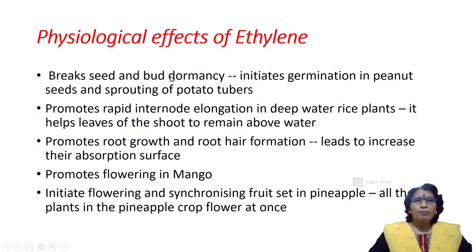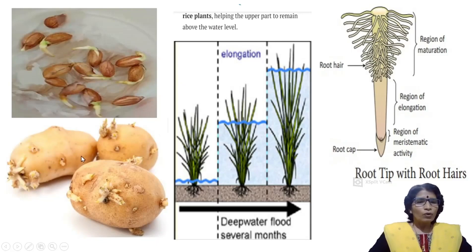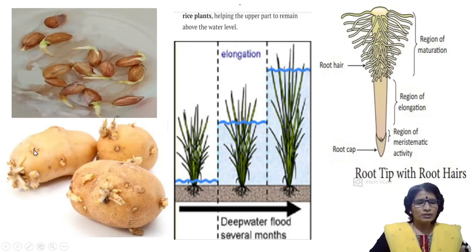Ethylene breaks seed and bud dormancy. An example of seed dormancy breaking is peanut seeds — germination of groundnut seeds can be observed. At home, you can observe the sprouting of potatoes when stored. Potato is a stem modification; the scar-like structures on potatoes are equal to nodal regions, which produce axillary buds that develop into sprouts.